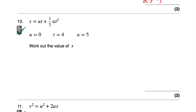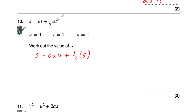Question number 10: s equals ut plus one half at squared, with u equal to 0, t equal to 4, and a equal to 5. We want to work out the value of s. So s equals ut — that's 0 times 4 — plus one half times a, which is 5, times t squared, which is 4 squared.